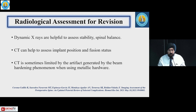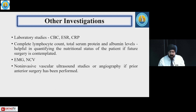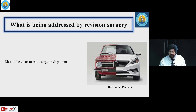Dynamic X-rays are helpful. CT can help assess implant position and fusion status, though previous implants pose challenges. Post-gadolinium T1 MRI images are useful in differentiating scar tissue from recurrent disc herniation and assessing leptomeningeal enhancement. Baseline tests — CBC, ESR, CRP — are important to rule out infection. Complete lymphocyte count, total serum protein, and albumin levels help quantify nutritional status. Electrophysiological tests and non-invasive vascular ultrasound or angiography may be needed if prior anterior surgery was performed.